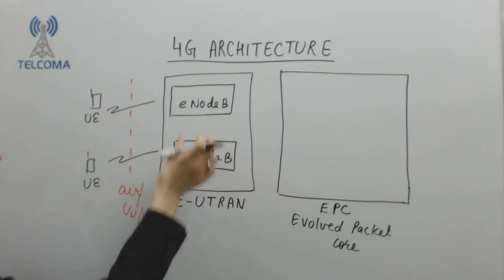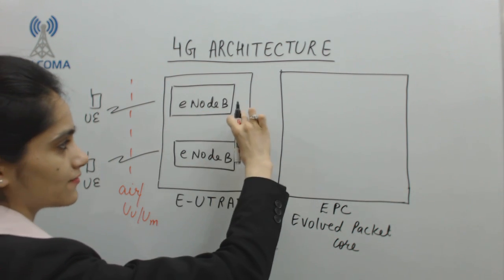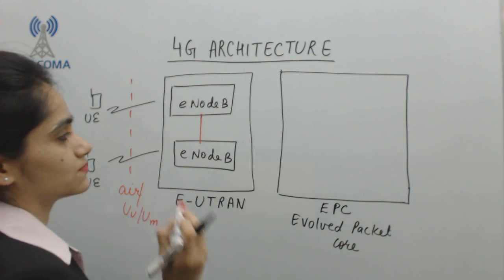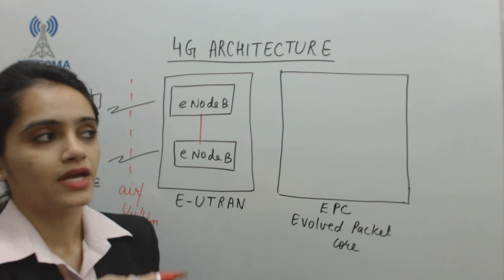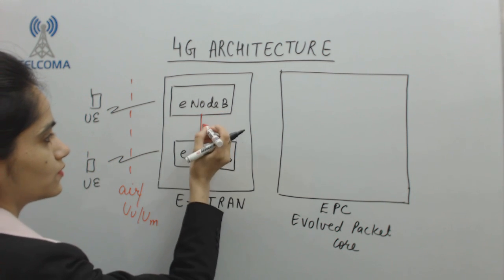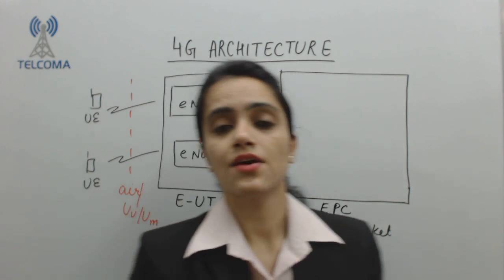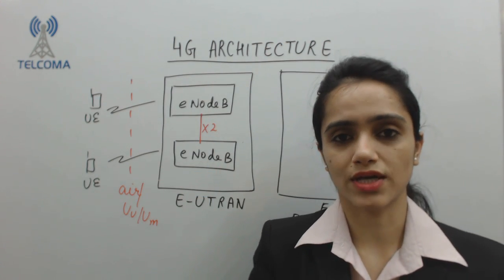Since we don't have a separate controller for ENodeB, there should be a proper interface between the two ENodeBs. The interface defined between two ENodeBs is the X2 interface. X2 is the interface which connects two ENodeBs together.